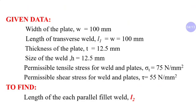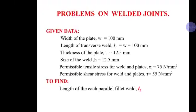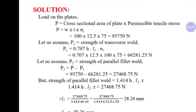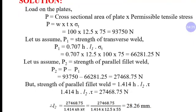Find: length of each parallel fillet weld, L2. Solution — load P: stress = load / area, so σt = P / (width × thickness). Therefore P = σt × w × t = 75 × 100 × 12.5 = 93,750 N.